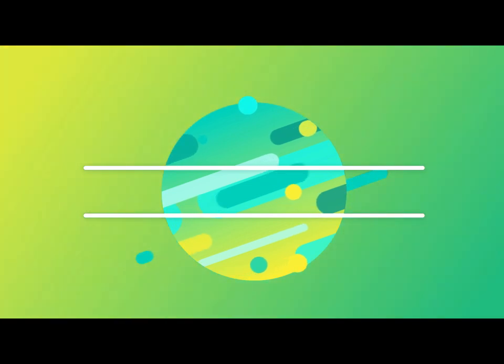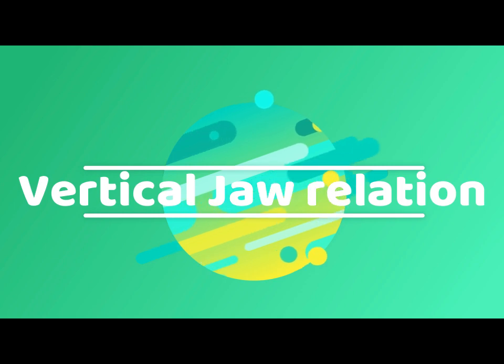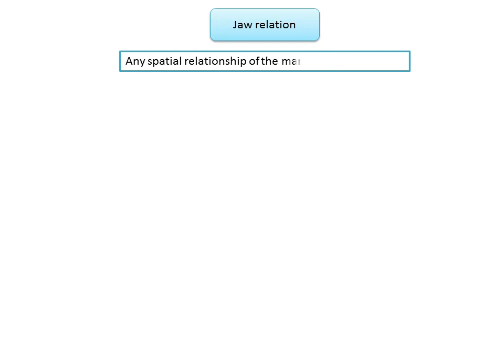Vertical dimension — understanding the concept. Jaw relation is recorded to measure the extensibility and the movements permissible by the patient's temporomandibular joint. To achieve this goal, the recording must include an approximate vertical dimension of occlusion and stable occlusal contacts in harmony with the existing TMJ and masticatory muscle functions. Jaw relation is defined as any relation of the mandible to the maxilla.